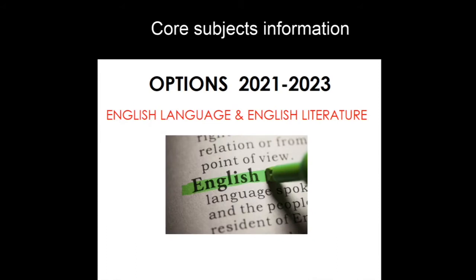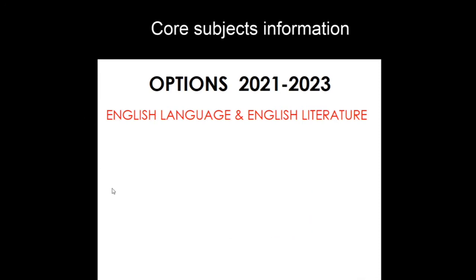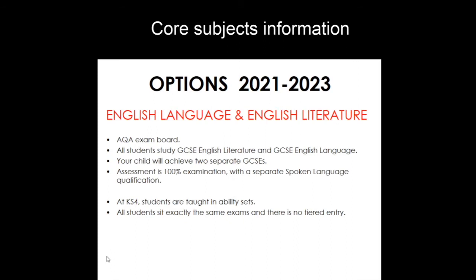Hi there, my name is Chris Smith. I'm English Faculty Leader here at Prince Henry's. The first thing to say about GCSE English is that it's actually two GCSEs — GCSE English Language and English Literature. They're both studied through AQA. There's also a spoken language element which stands separately as a standalone qualification, so in effect you get three qualifications. All students study both GCSEs and the spoken language element.